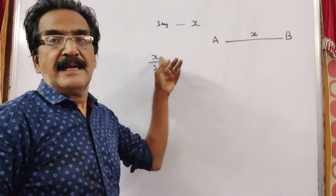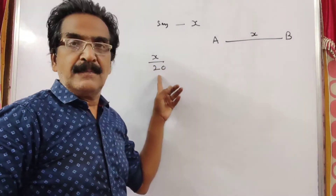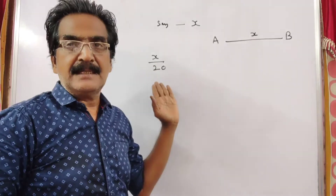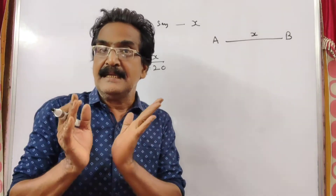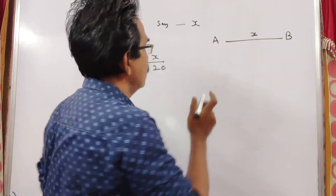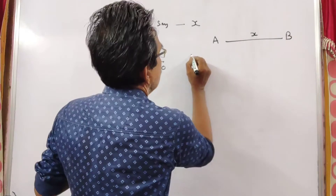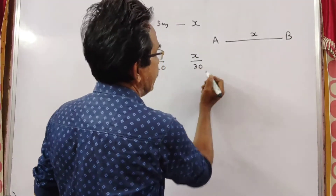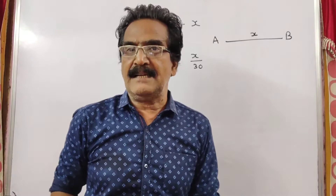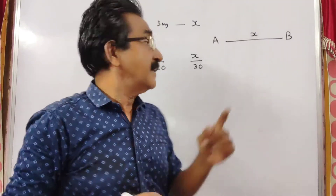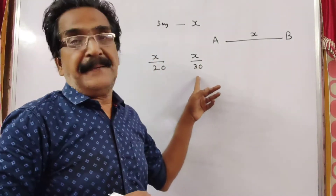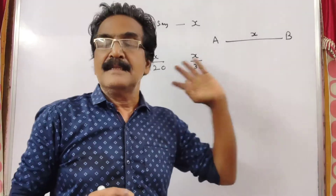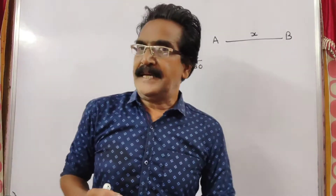Distance X, time equals distance over velocity: 20 kmph. So the first car takes X by 20 hours. The second car takes X by 30 hours — distance X, speed is 30 kmph, so second car takes X by 30 hours.